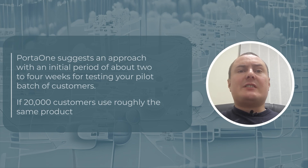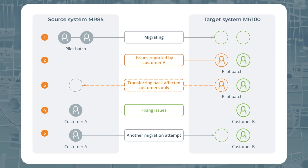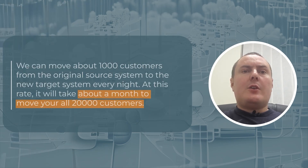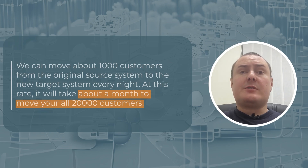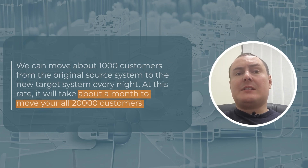That's why we suggest separating such customers. For example, in the first batch, we could migrate all customers who are using product ABC. The second batch for migration would contain customers who are using payment system X, and so on and so forth. Just to give you some more perspective: when we are making a migration, we might migrate about 1,000 customers from the original source system to the new target system every night.